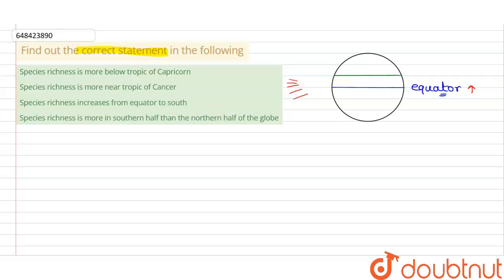Now moving further, this green line represents the tropical region. As we go from the equator to the tropical region, the species richness decreases somewhat, but it is still very good in the tropical region. The tropical regions are the areas where you will find high diversity and species richness as we move up or down from the equator.